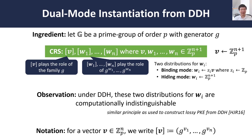The key first observation is that assuming the DDH assumption holds, these two distributions — when we encode the w's in the exponents — are actually computationally indistinguishable. Under DDH, it is hard to distinguish a rank-1 matrix in the exponent from a full-rank matrix in the exponent. That is exactly what we have here. And if you're familiar with constructions of lossy public key encryption and related primitives, this is conceptually very similar.